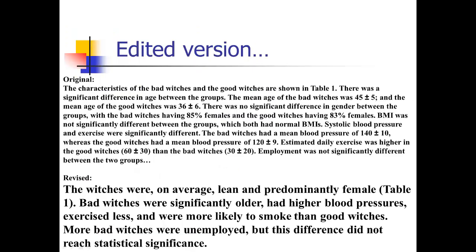Here's my revised version. It would say something like: 'The witches were on average lean and predominantly female (table one). Bad witches were significantly older, had higher blood pressures, exercised less, and were more likely to smoke than good witches. More bad witches were unemployed, but this difference did not reach statistical significance.' Notice I didn't give any exact numbers — we just want to know how they differ. That's a much more useful paragraph because it gives the reader all the key points, and if they want more detail, they can go to the table.